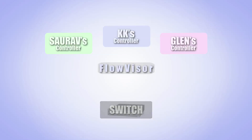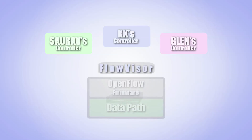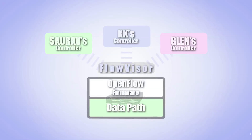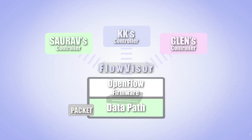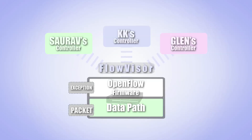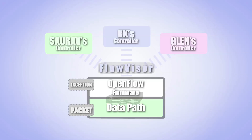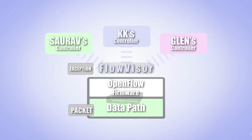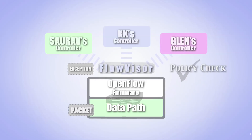Let's see how this works in practice. In OpenFlow, when a packet arrives at a switch that does not match any cached flow entries, the switch generates a message to the controller asking what to do with packets of this form. The FlowVisor then intercepts this message and makes a policy check to determine which controller is responsible for this packet.